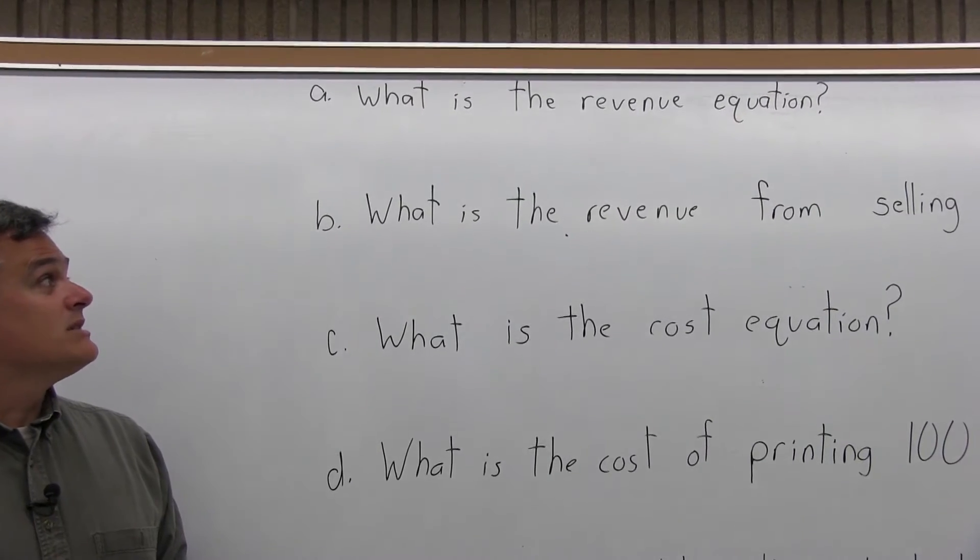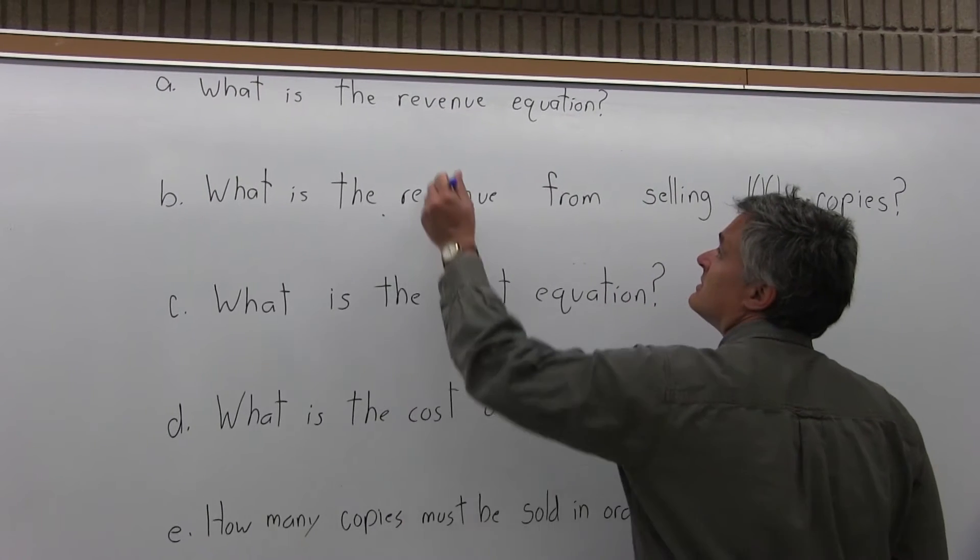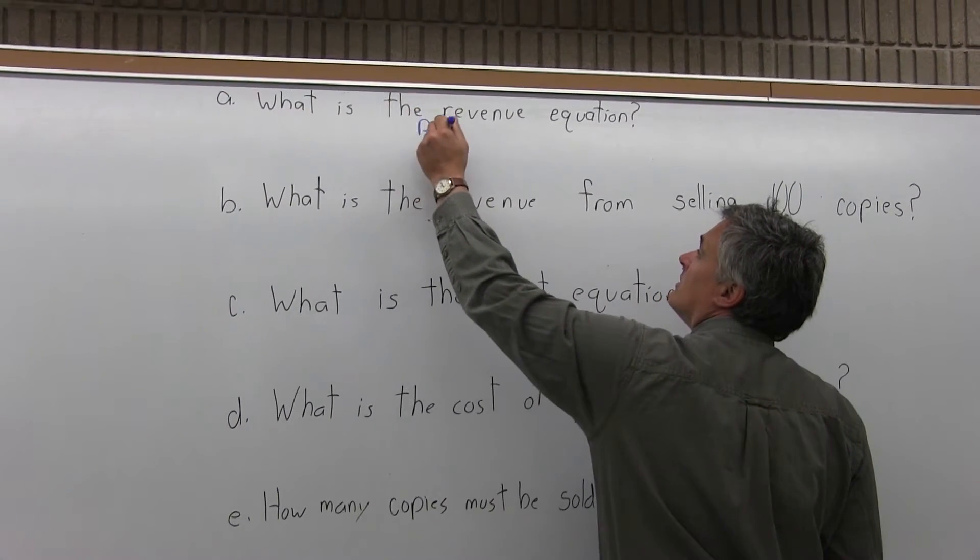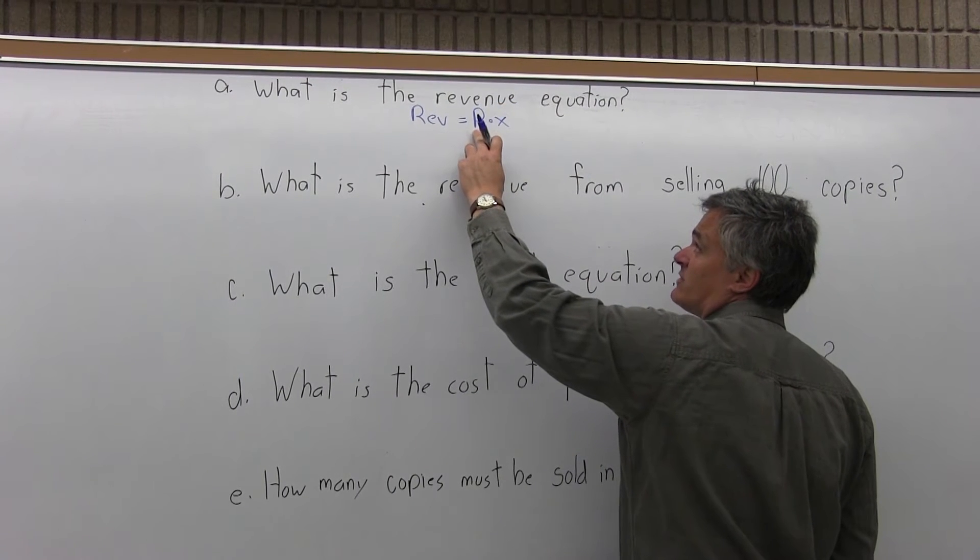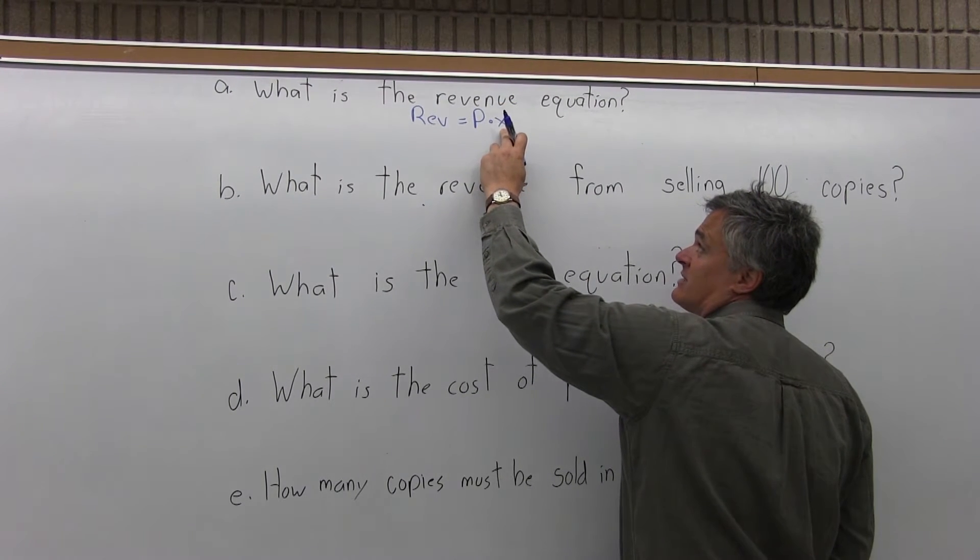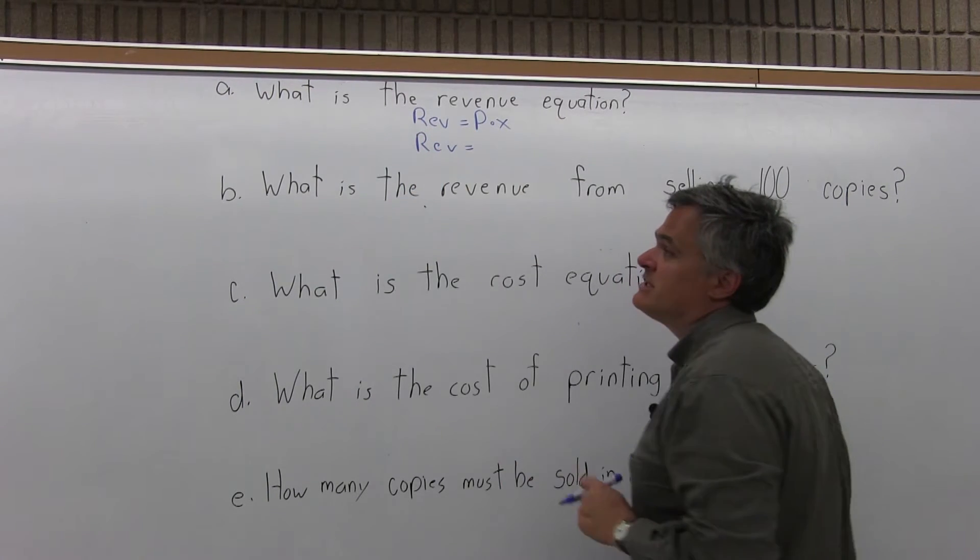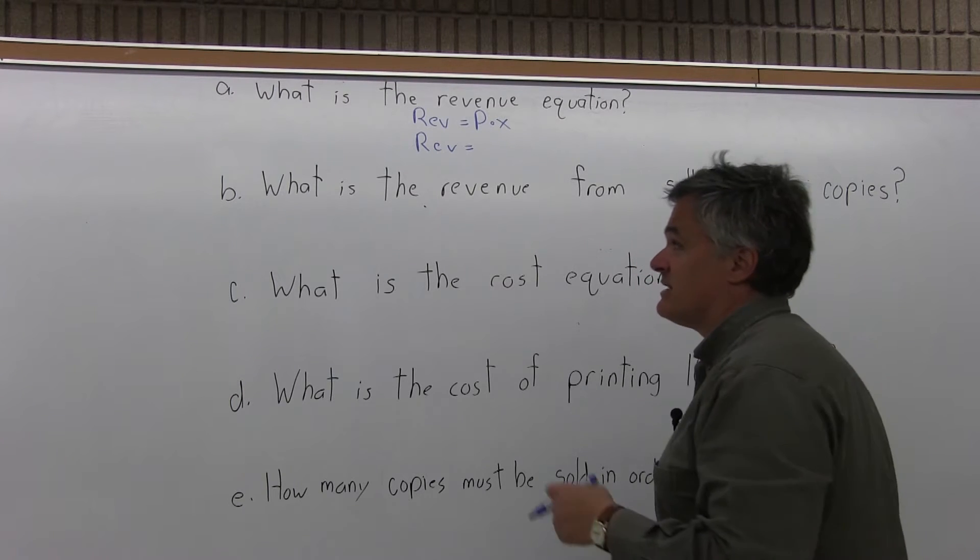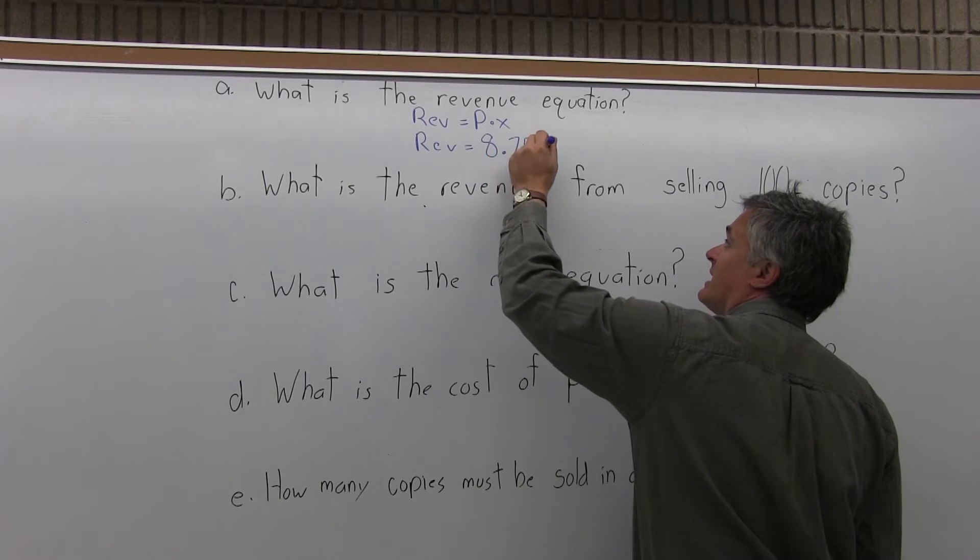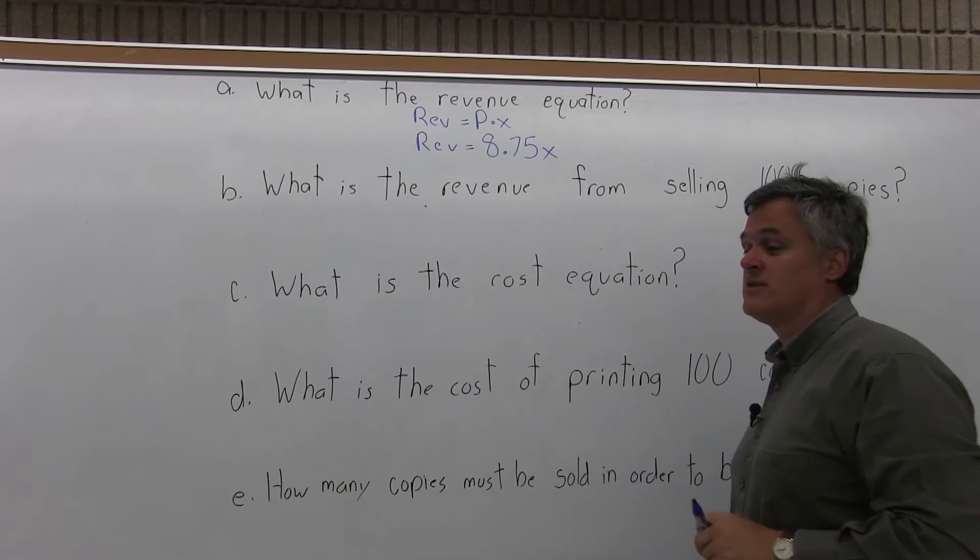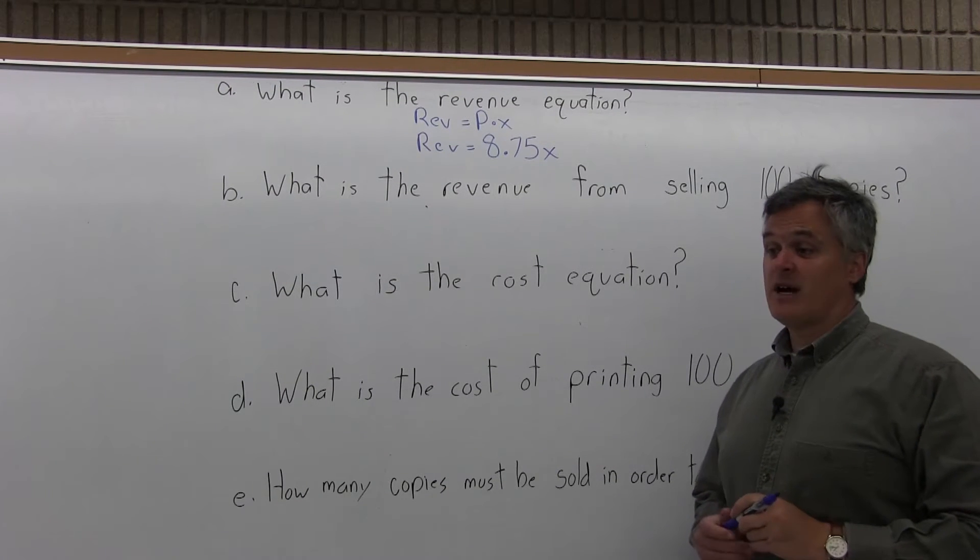Part A says what is the revenue equation? The revenue equation is revenue equals P times X where P is the selling price for each item and X is the number of items sold. For this problem the selling price is $8.75, so P is $8.75 and X represents the number of copies of the newspaper sold. So that's part A, revenue is $8.75X.